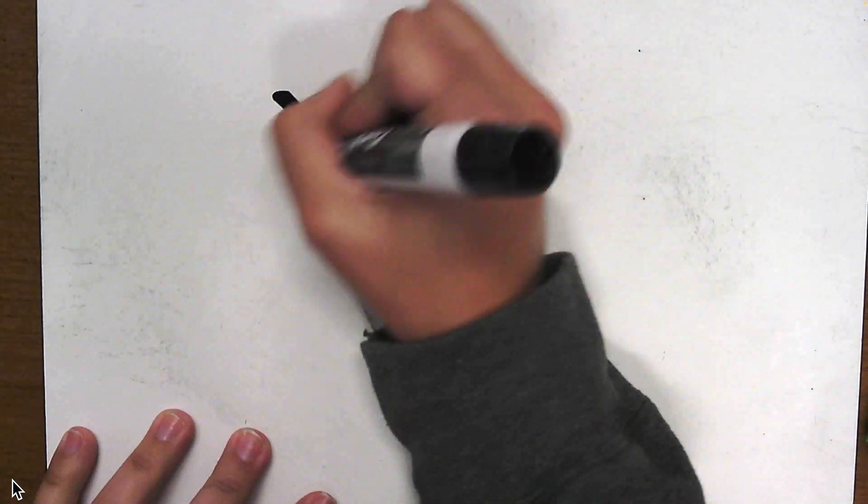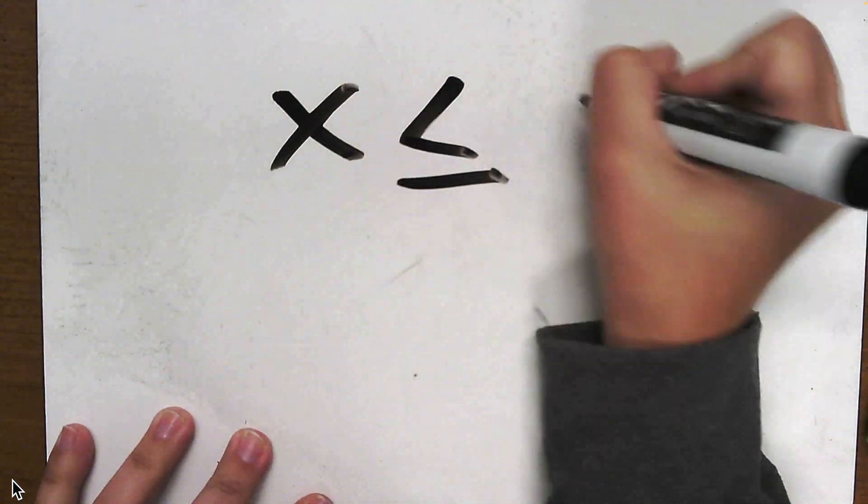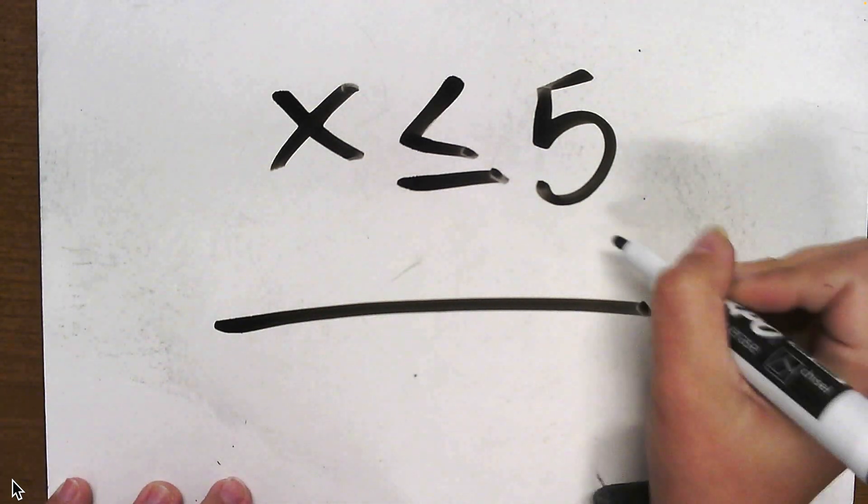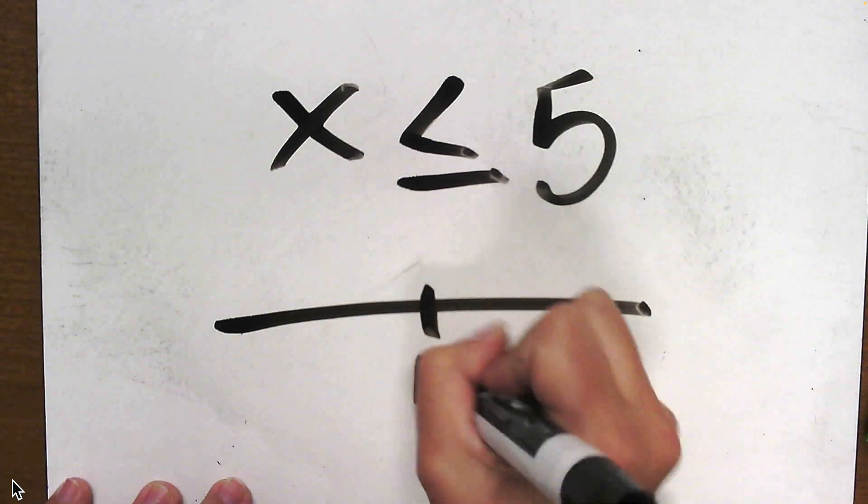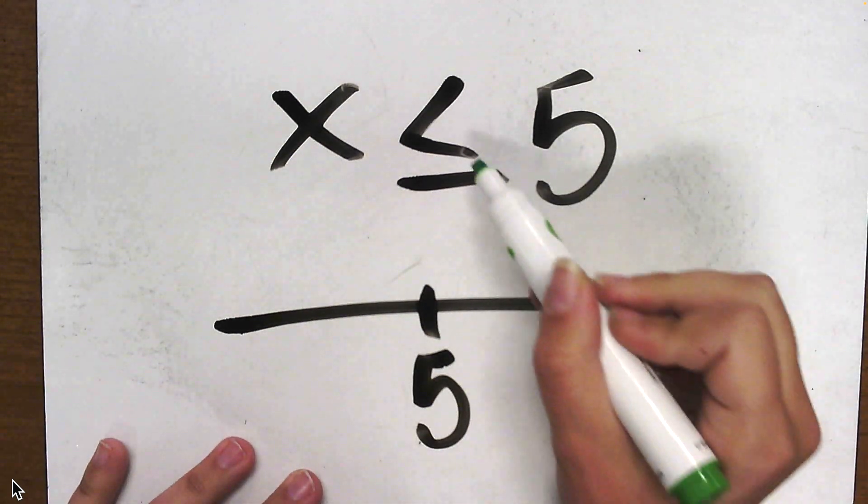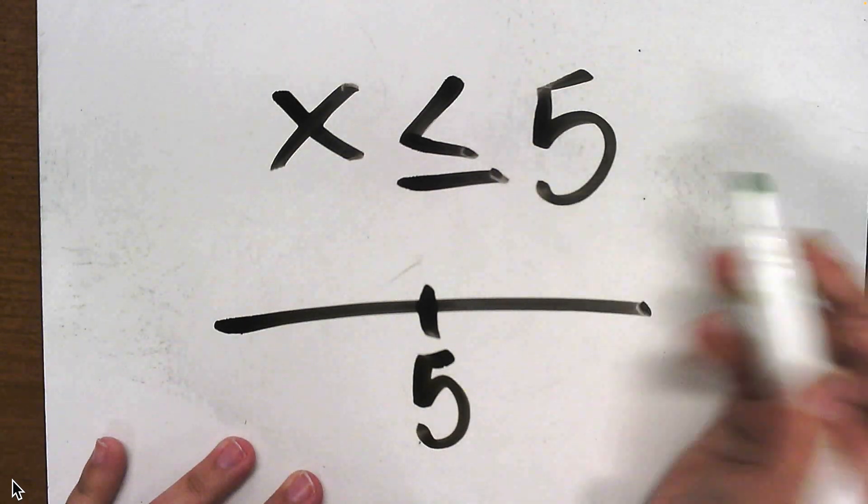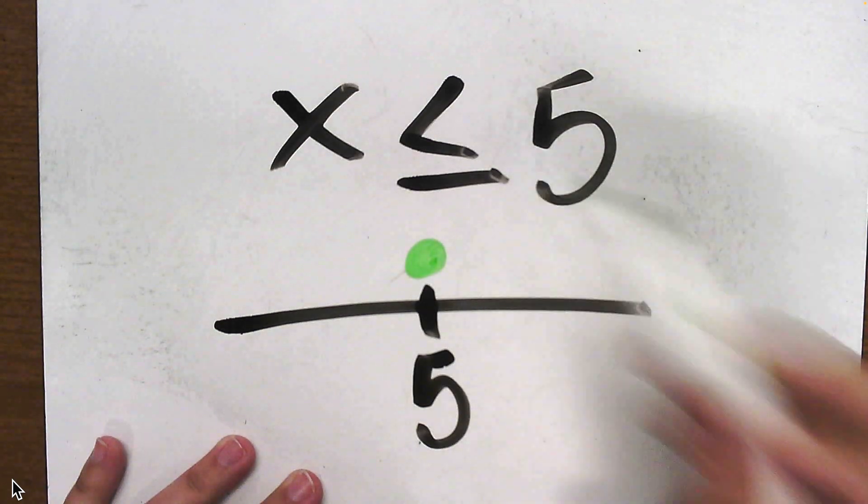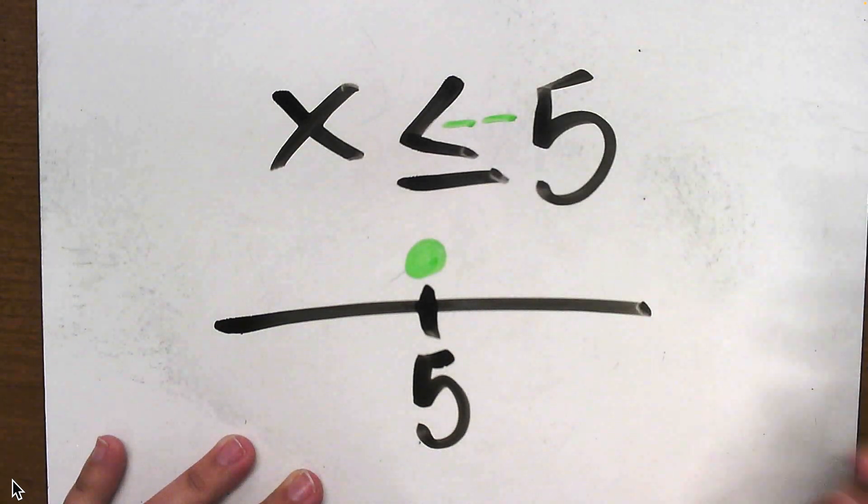Let's get into some actual problems. If I have the inequality x is less than or equal to 5, I'm going to make my graph. I'm going to put 5 somewhere near the middle, and then I'm going to go into plotting. I see that this has a line underneath, which means my dot is going to be closed. And then if I wanted to make this an arrow, it's going that direction, so I'm going to make my arrow go this direction.